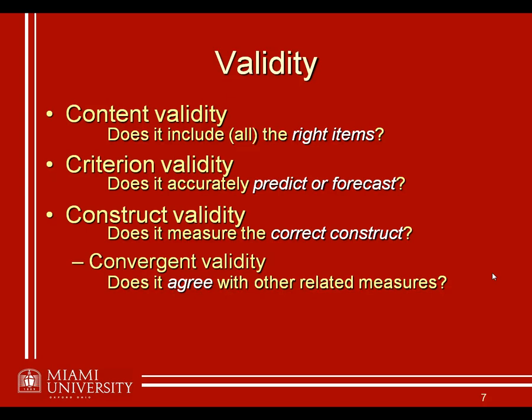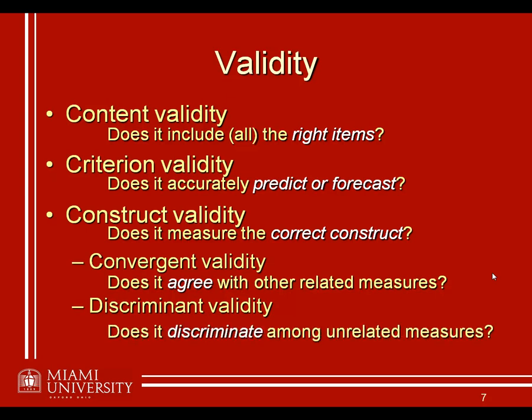A similar and complementary type of validity for establishing construct validity is what we call discriminant validity. So not only do we want our new test to measure intelligence, we don't want it to measure everything else as well. That is, does it discriminate among unrelated measures? Maybe our test does indeed measure intelligence, but it's also measuring a lot of other things besides intelligence. So in order to measure the correct construct, we want our measurement to measure the thing that we do want to measure and not measure things that we don't want it to measure.